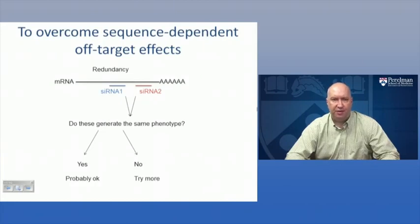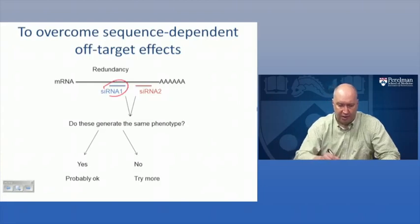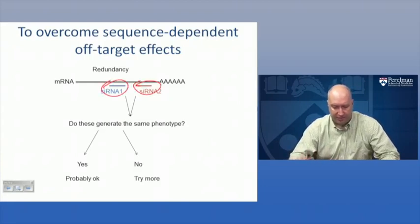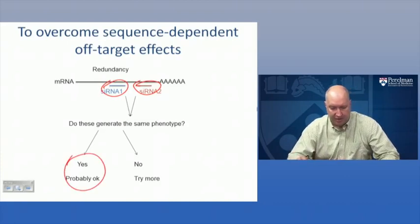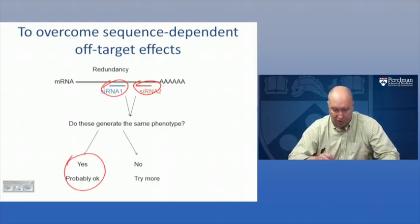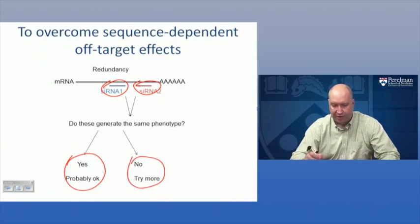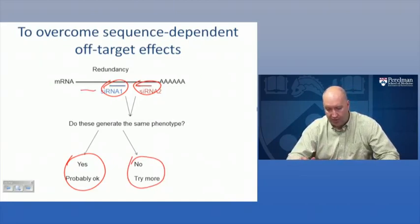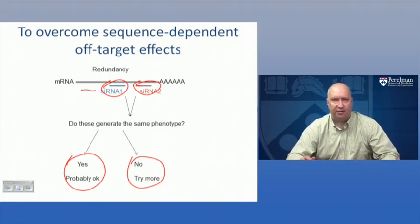A couple of methods have been developed to overcome sequence-dependent off-target effects. The first and most popular method is redundancy - simply asking that more than one siRNA pair generates the same phenotype in a cellular assay. If more than one siRNA produces the same phenotype, it's probably an on-target effect. If not, you may need to try more siRNAs designed elsewhere in the gene, or it could be that the original result was an off-target effect.